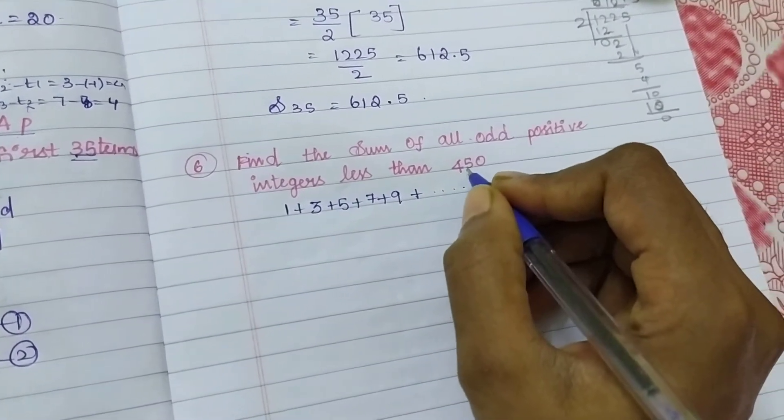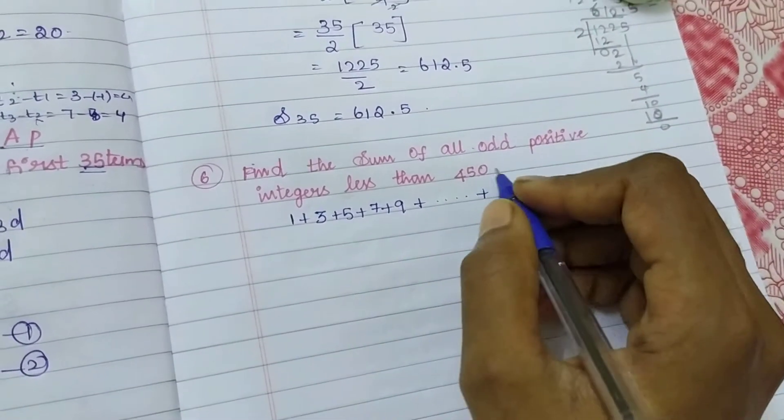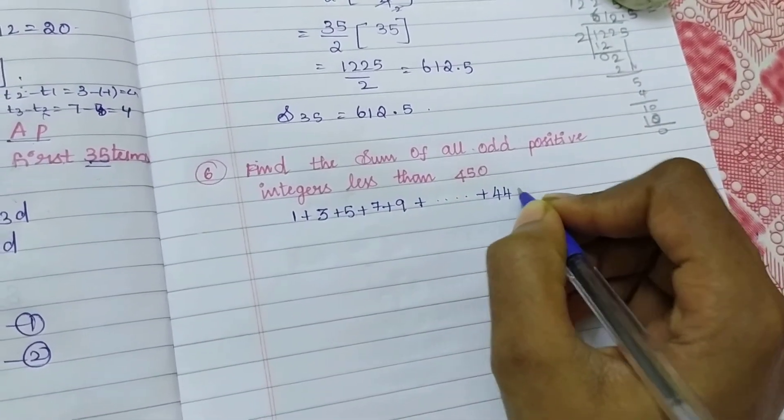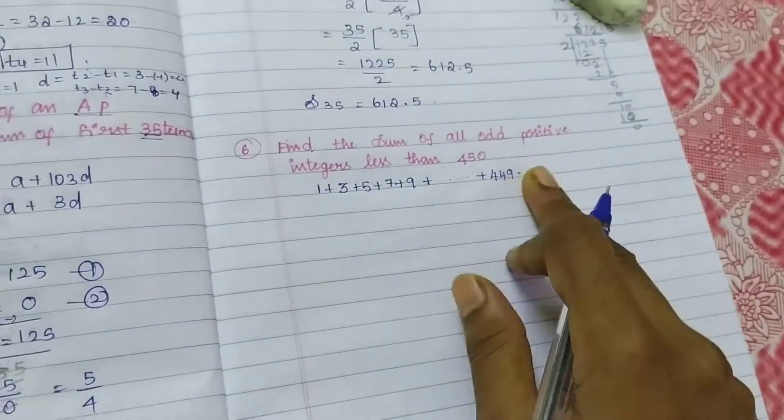450 is even, so the before number is what? 449 is my before number, right? So sum of these numbers.